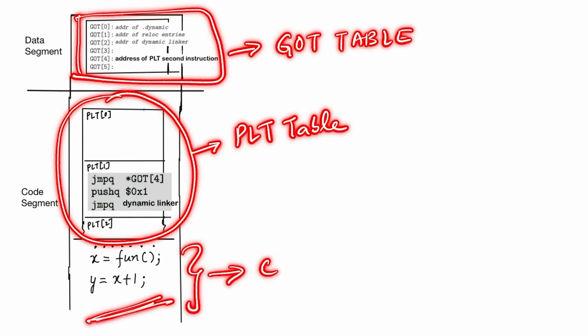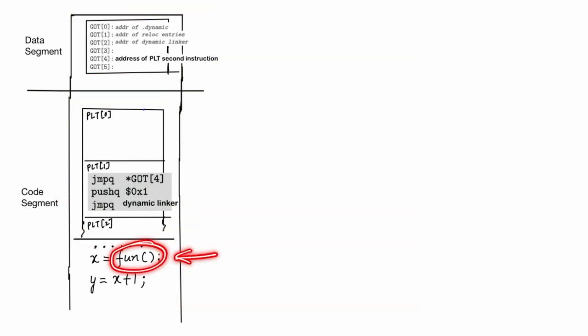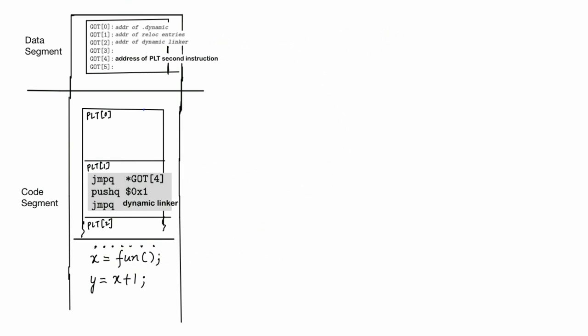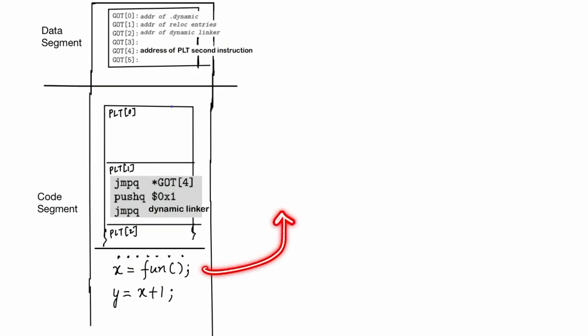Additionally, there's a bit of code in the code section that calls the function 'fun' we just talked about. As we have previously mentioned, the function 'fun' has corresponding entries in both PLT and GOT tables. Every time an external function call is made in a running program, such as when we call function 'fun', the execution leaps to a PLT entry for that function.